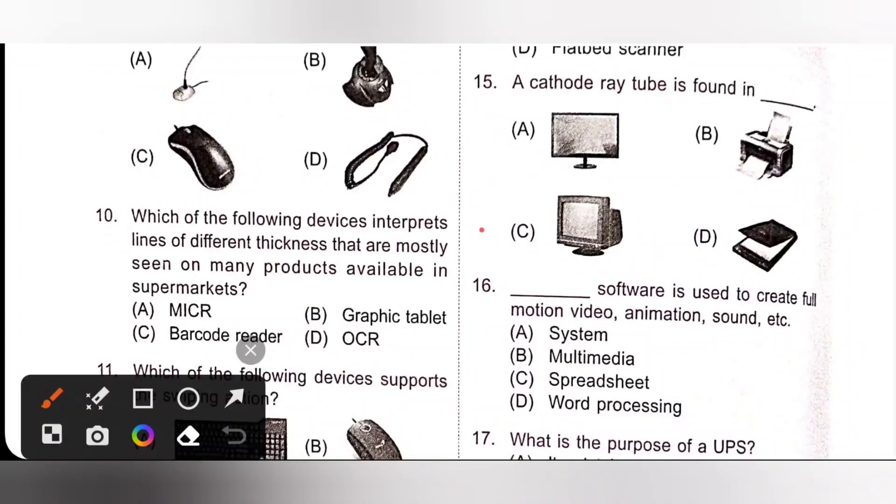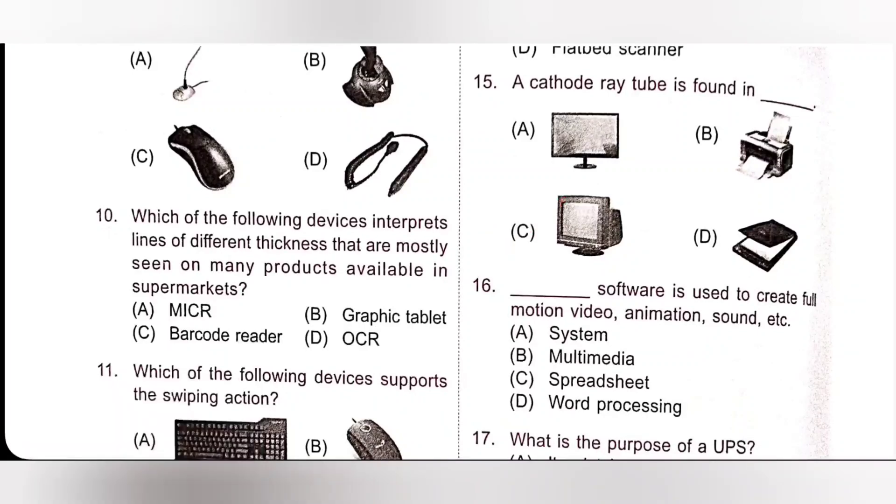Fifteenth, a cathode ray tube is found in... we already discussed this one. A cathode ray tube is found in traditional computers or televisions. Option C is the correct answer.